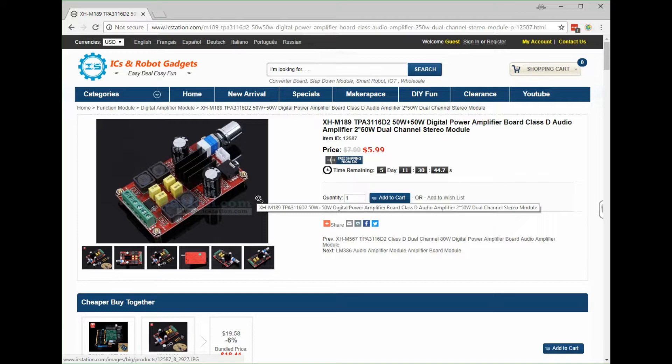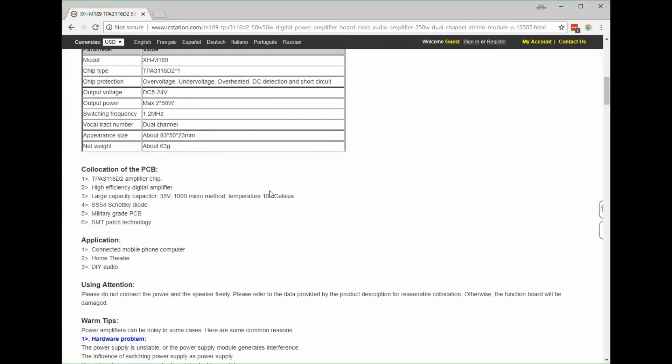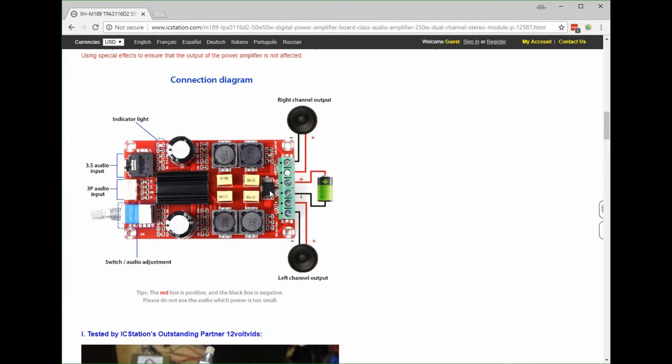Looking at the board layout, on the left hand side we've got inputs and outputs. We've got a 3.5mm headphone jack, an input jack on the front, and then the variable resistor for the volume and on-off switch.